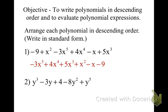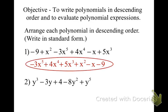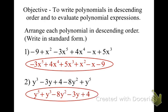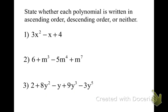Now check your work. We start with y to the 5th, then positive y to the 3rd, negative 8y squared, negative 3y, positive 4, and we are done. So that's putting it in descending order.